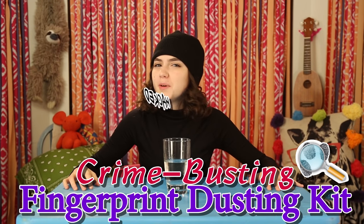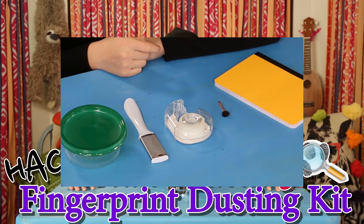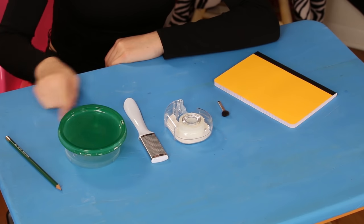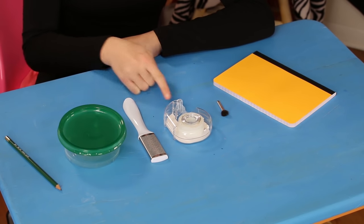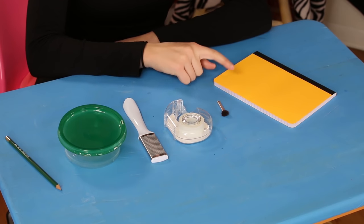Someone's been here. I can sense it. But let's take a closer look with my hacked crime-busting fingerprint dusting kit. For this you'll need a pencil, a container, a nail file, clear tape, a makeup brush, and a notebook.